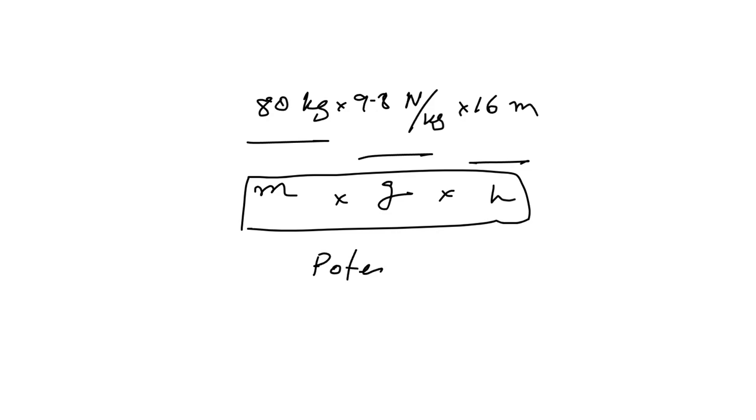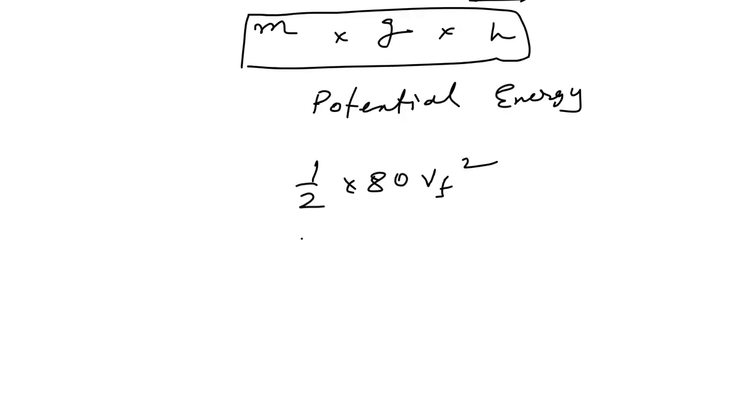Next, the second term is half times 80 times Vf squared. Now this is clearly kinetic energy, which is half m Vf squared. So this is kinetic energy which is linear.